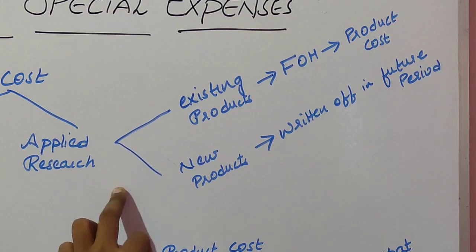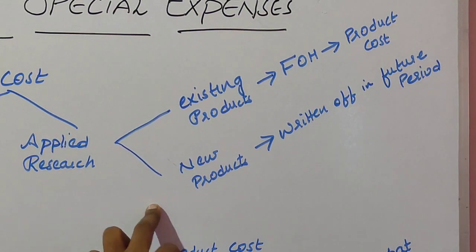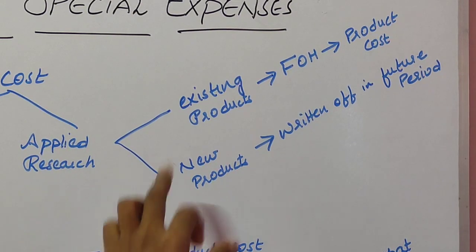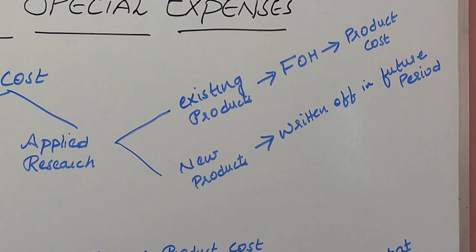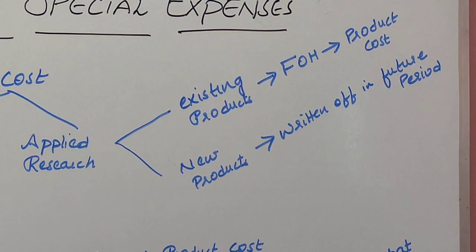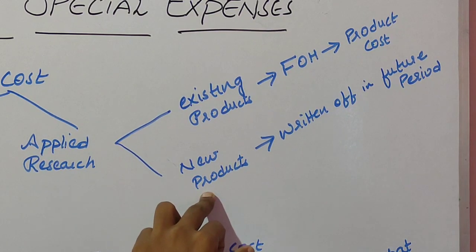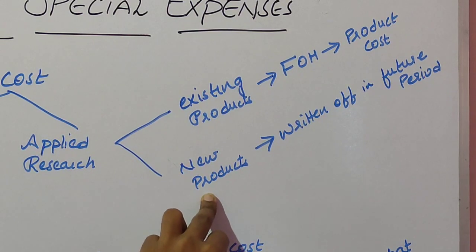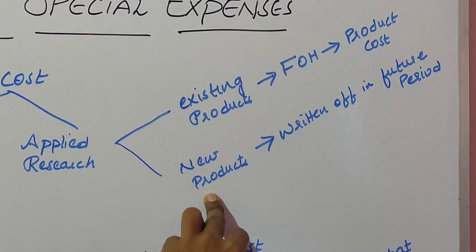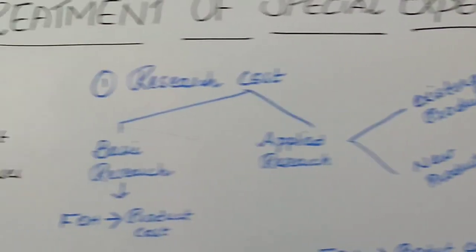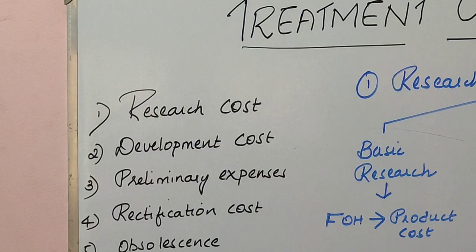If applied research cost is incurred for finding new products or new methods of production or new processes, it is written off during future periods. This means the amount is not deducted all in one period; rather it is carried over different periods during which the product's benefit is derived — for however many years you derive benefit from the product.